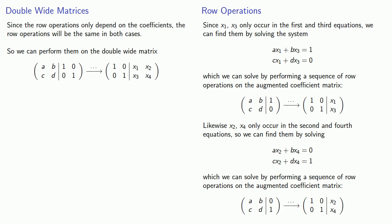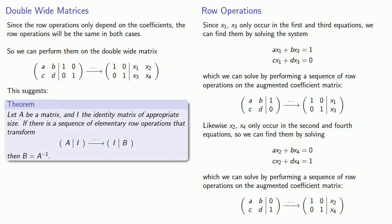And so this leads to the following theorem. Let A be any matrix and I the identity matrix of the appropriate size. If there is a sequence of elementary row operations that transform this block matrix, matrix A on the left, the identity on the right, into a block matrix with the identity on the left and some new matrix on the right, then this matrix B is going to be the inverse of our matrix A.